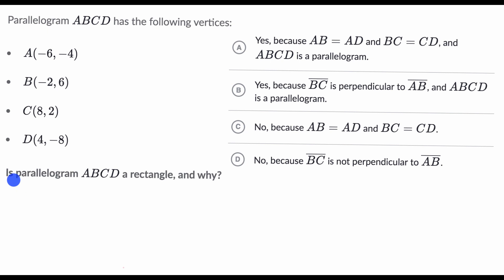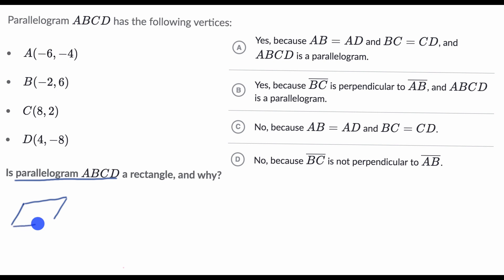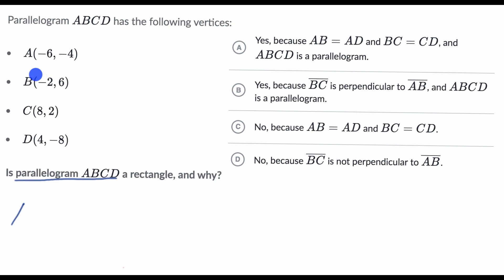In general, if you know that something is already a parallelogram and you want to determine whether it's a rectangle, it's really a question of whether the adjacent sides intersect at a right angle. What we know about a parallelogram is that the opposite sides are parallel. All rectangles are parallelograms, but not all parallelograms are rectangles. In order for a parallelogram to be a rectangle, these sides need to intersect at right angles. Let's figure that out based on the coordinates they've given us.